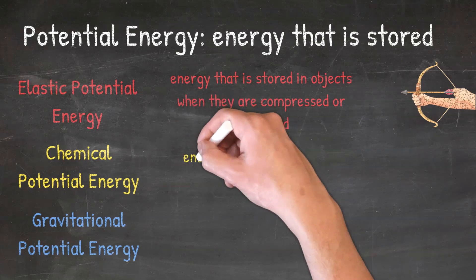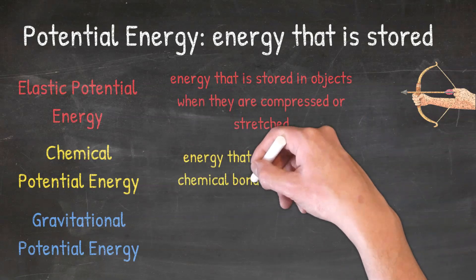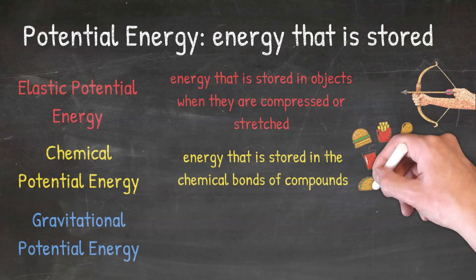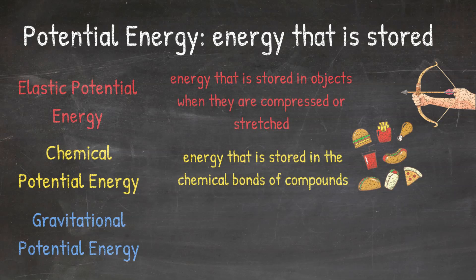Chemical potential energy is energy that is stored in the chemical bonds of compounds. An example of this is in the food that we eat. Food is made of chemicals that our body then breaks down to convert to energy we can use.